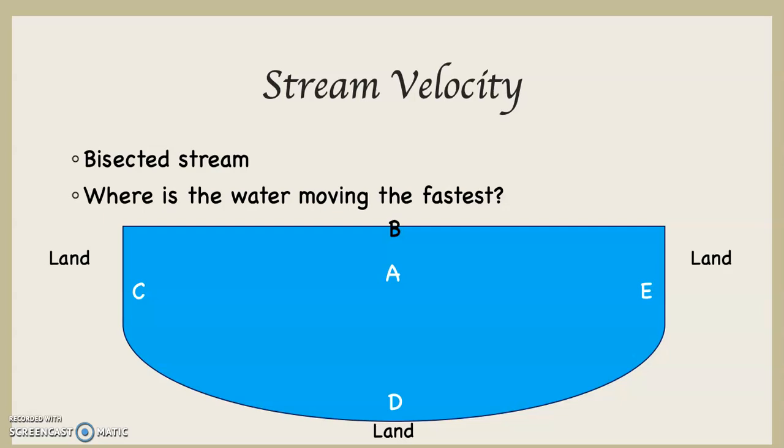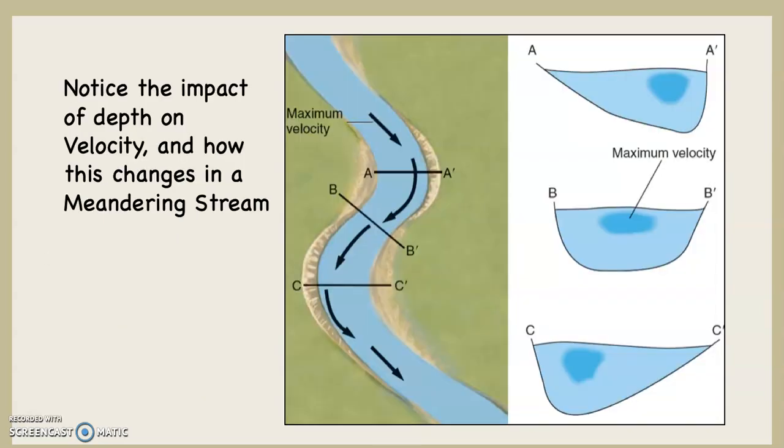Notice the impact of depth on velocity and how this changes in a meandering stream. If you look at A on the upper right-hand side, you can see that the water is deeper along that right bank, which is the outside cut bank, and you can see where the fastest velocity is at, which is represented by the dark color blue.